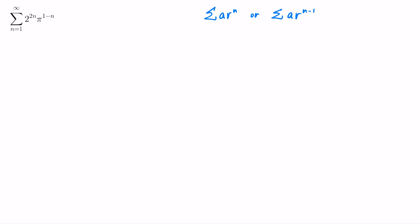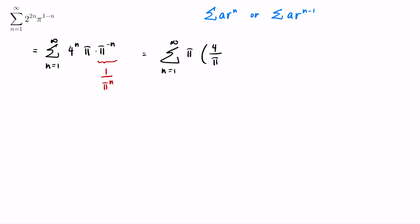Let's write this series in standard form. It can be written as a summation from N equals 1, where 2^(2N) equals 4^N. Applying exponent rules, we write that as π times π^(−N), and π^(−N) equals 1 over π^N. So we can write our series as summation from N equals 1 to infinity of π times (4/π)^N. We have now identified the common ratio, which is equal to 4 over π.